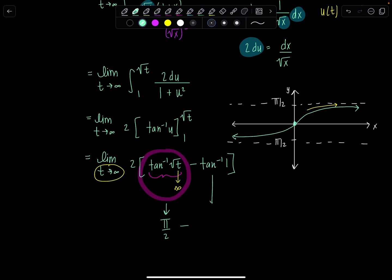Minus, and then tan inverse of 1, that's just a constant. You should know that value. It's pi over 4. And then we still have 2 out front.